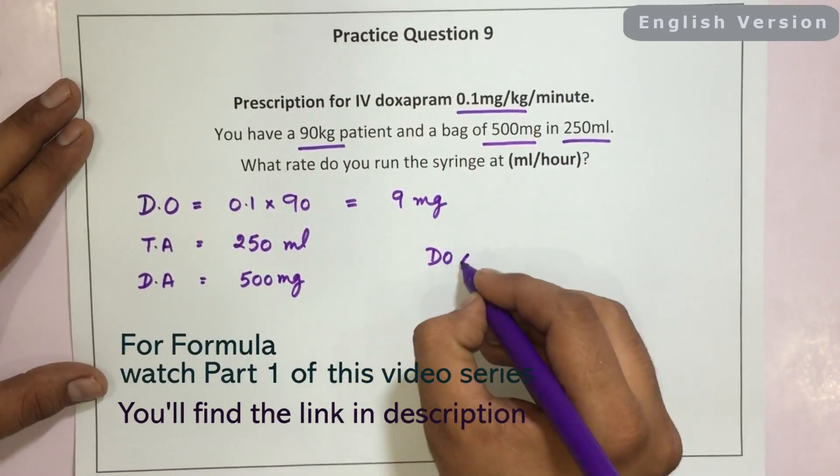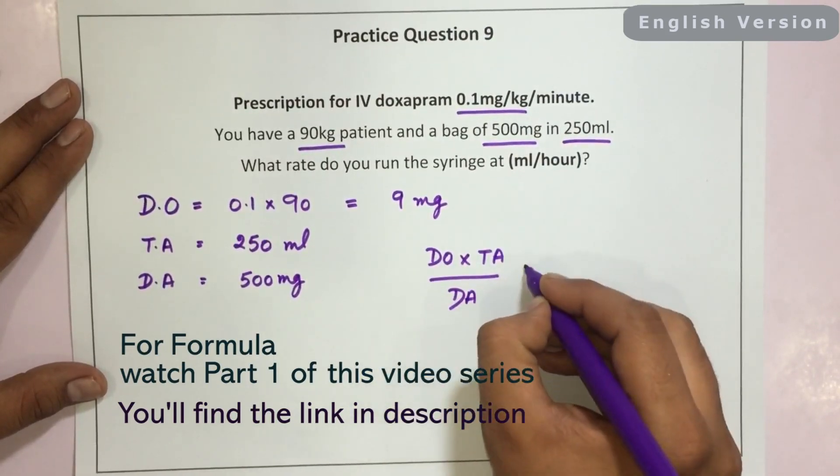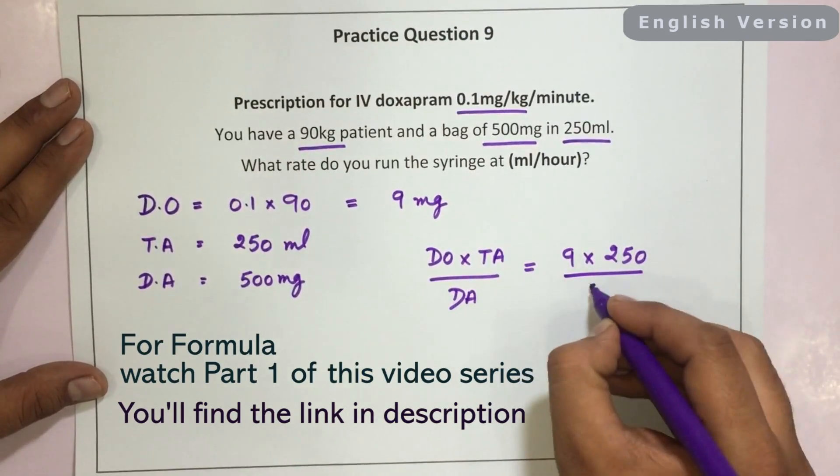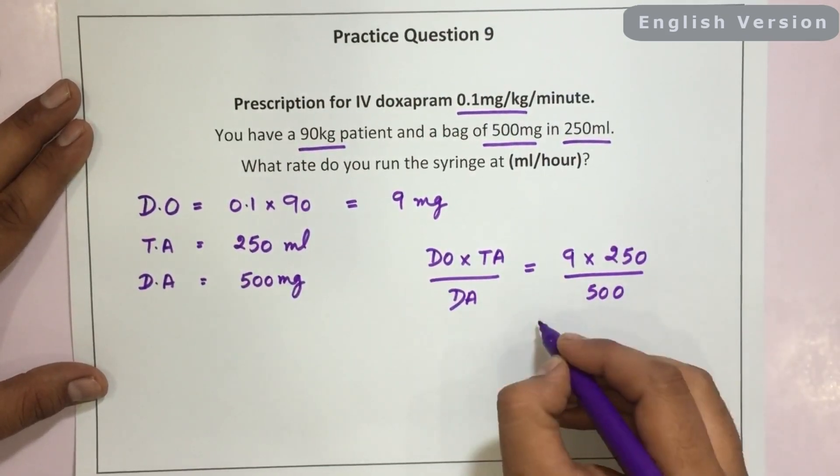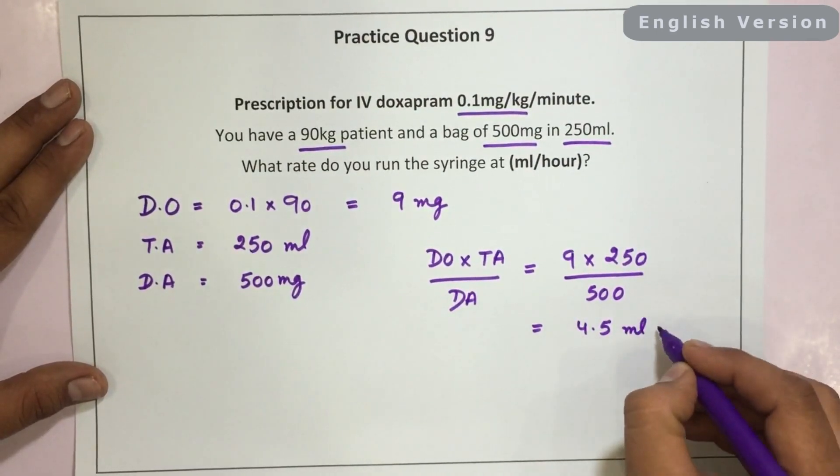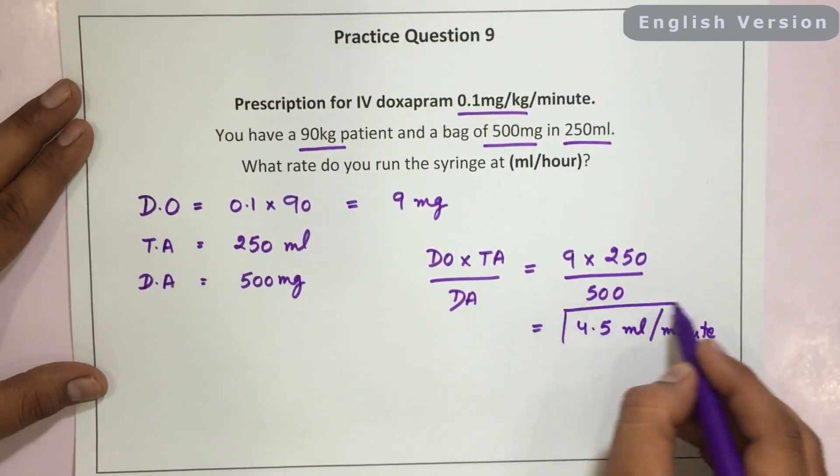As per the formula, DO TA DA is equal to 9 250 divided by 500. It would turn out to be 4.5 ml per minute. So this would be the answer.